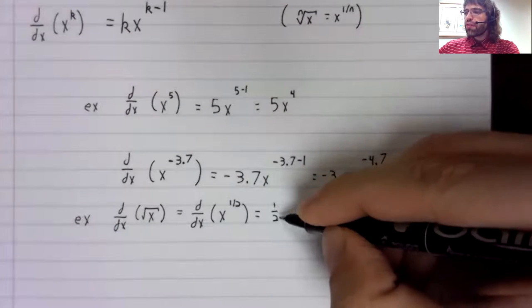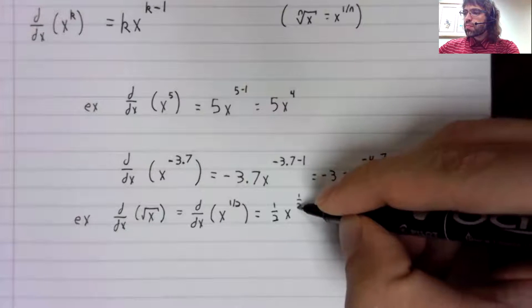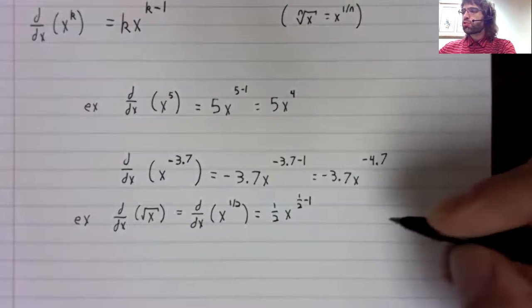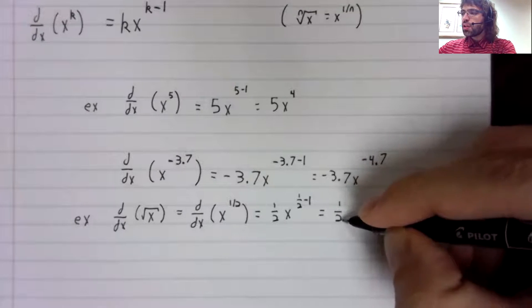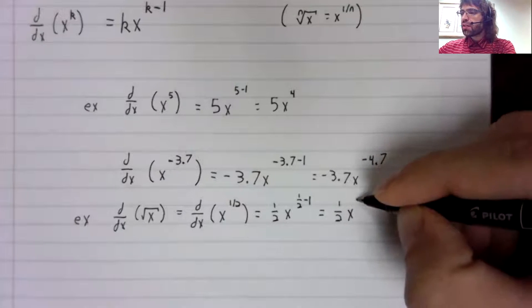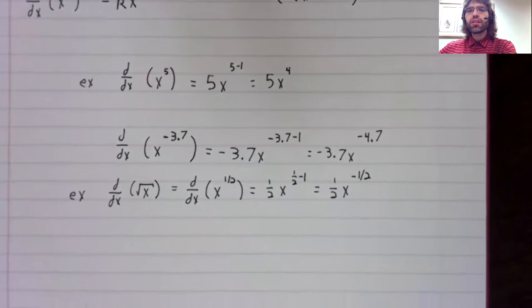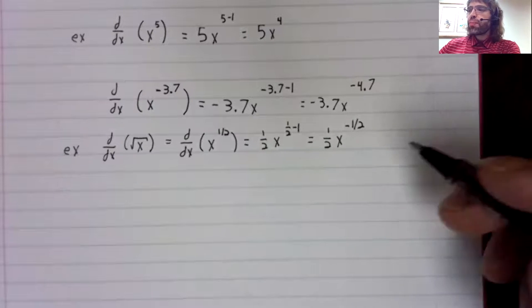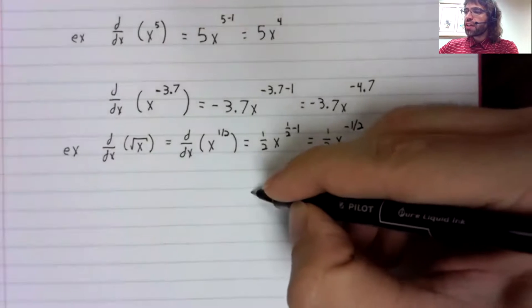The one-half comes down. In the power, we subtract 1. So one-half times x to the negative one-half. And that's the derivative. We could rewrite this a little if we wanted to.